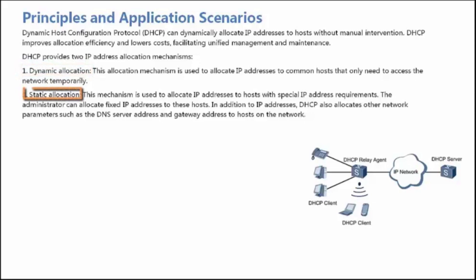Static Allocation: this allocation mechanism is used to allocate IP Addresses to hosts with special IP Address requirements. For example, the administrator can manually allocate an IP Address to a file server that needs to communicate with external networks.